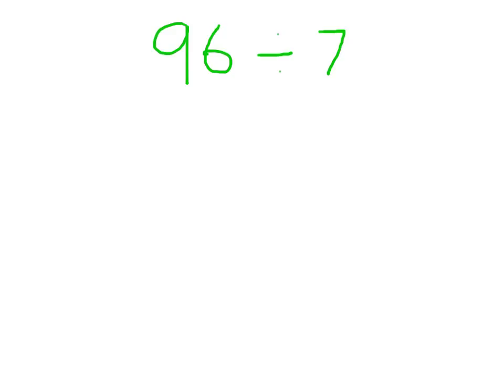You can divide using partitioning, even when the number doesn't divide exactly. So if I have 96 divided by 7, I can multiply 7 by 10 to give me 70, and that will be nice and easy to divide.